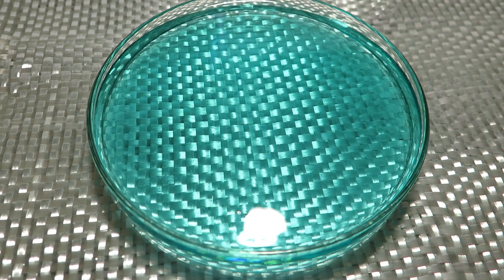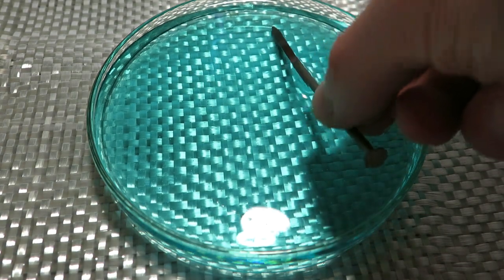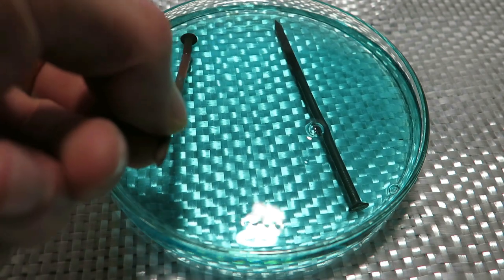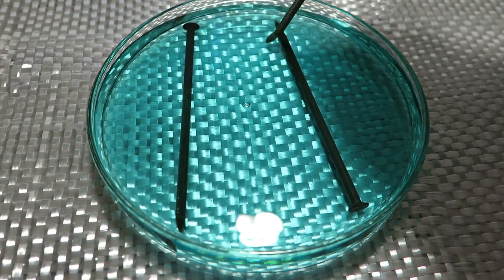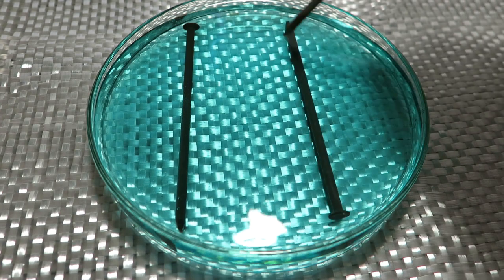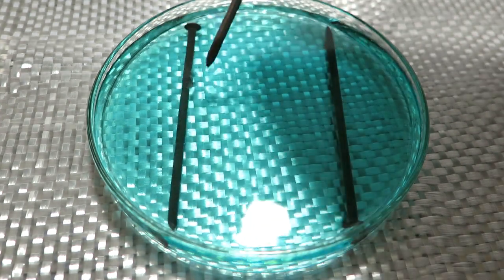Our reducing agent will be nails. I will add 4 nails to the solution. You can see that immediately the nails will turn black. This black color is actually the copper that is deposited on the surface of the nail.